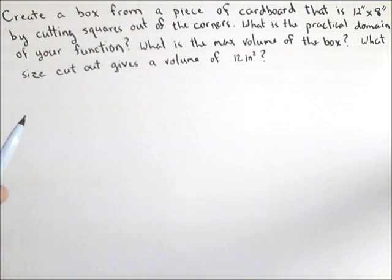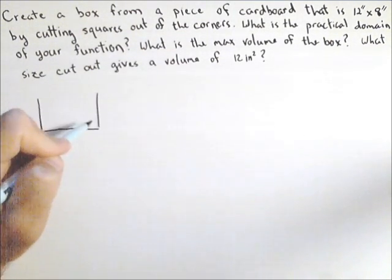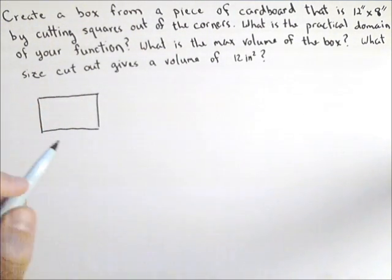So first thing we should do is draw a picture of our piece of cardboard, and what we're going to be doing is making cutouts. So a good idea is to label our variable. So let's call x, well think about what the unknown is that drives everything, it's this cutout.